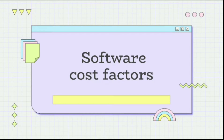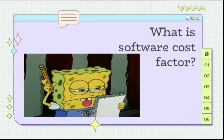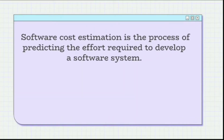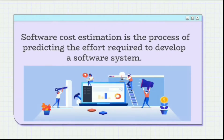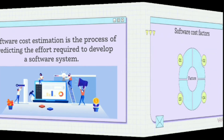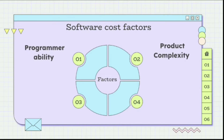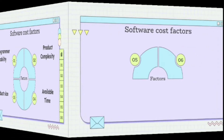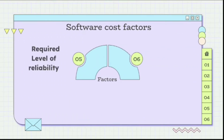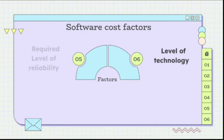Software Cost Factors. Before moving further, let's see what is Software Cost Factor. Software Cost Estimation is the process of predicting the effort required to develop a software system. Some of the factors are Programmer Ability, Product Complexity, Product Size, Available Time, Required Level of Reliability, and the Level of Technology.